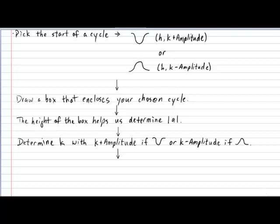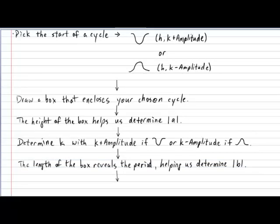In our next step, we can finally use the length of the box, which represents the period, to help us determine the absolute value of b. And finally, depending on where you chose to start your cycle, that will help you determine the sign of the variable a. The sign of the variable b can actually be anything.